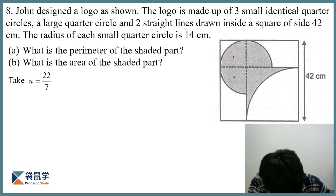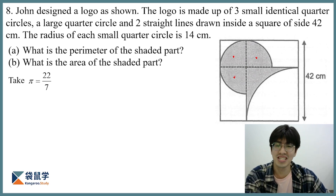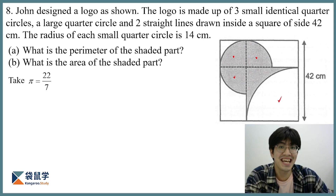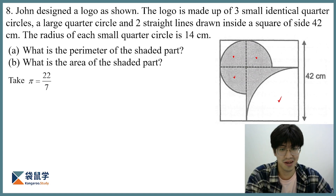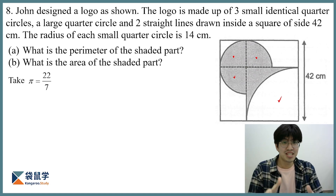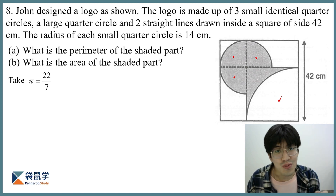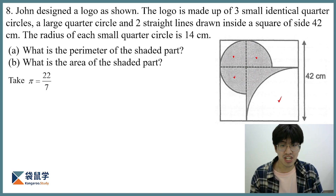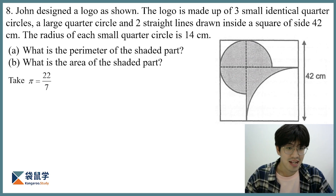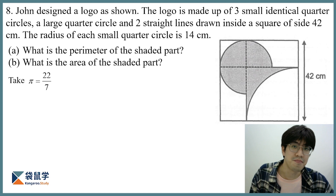So one, two, three — they're all identical. And then there's a larger sector over here, which is again a quarter of a circle. And there are two straight lines that we can find in this square of side 42. The radius of each small quarter circle is 14. Like always, we always try to label out this information in our shape.